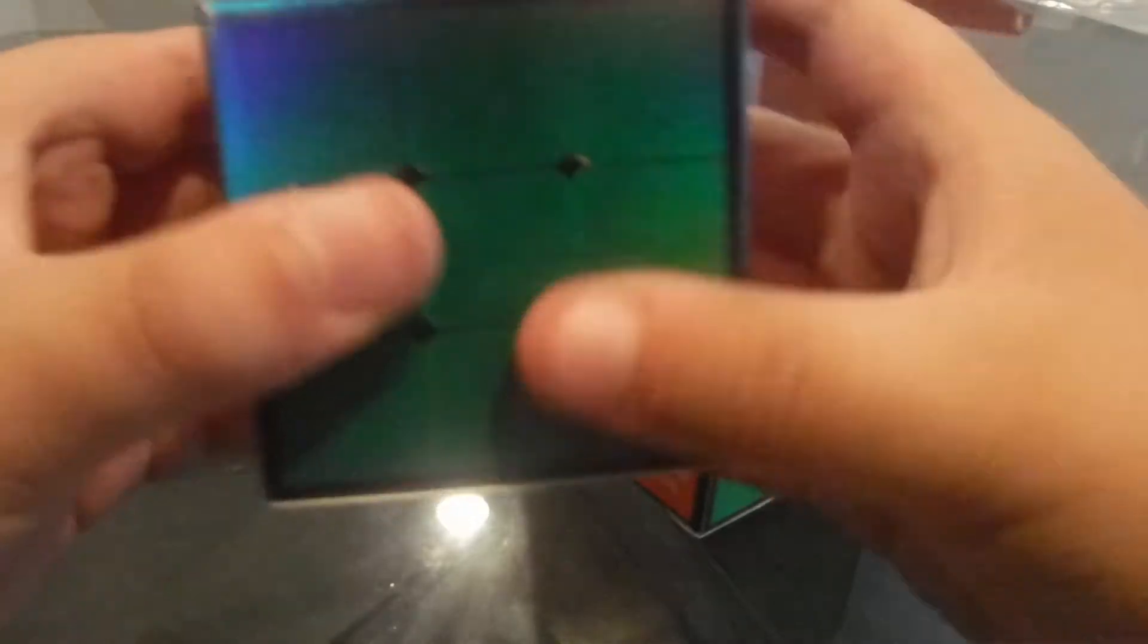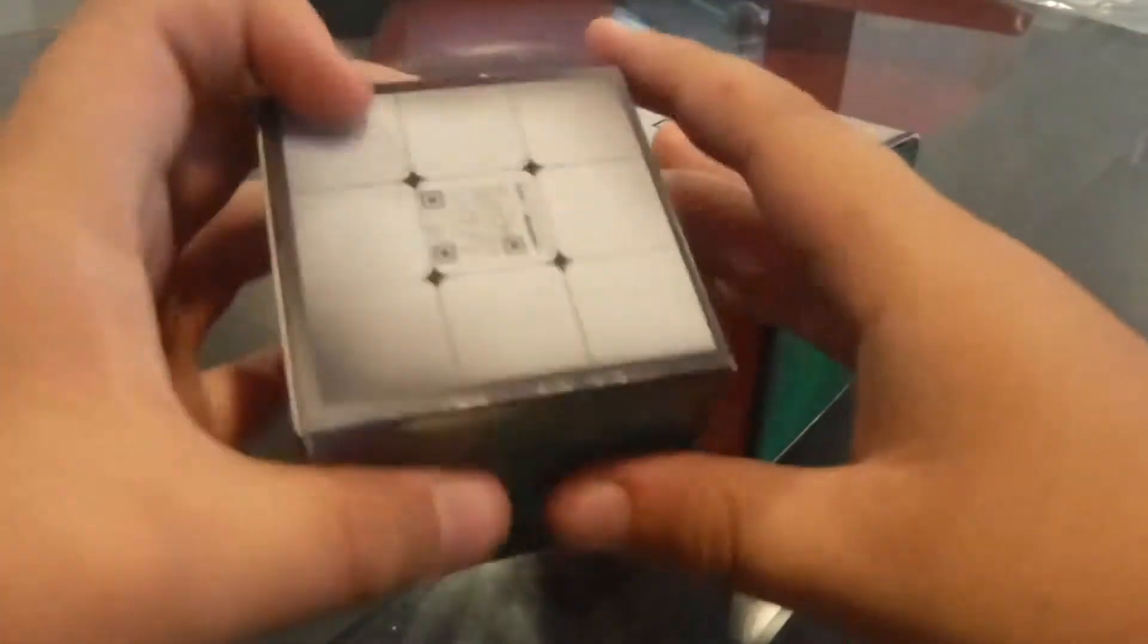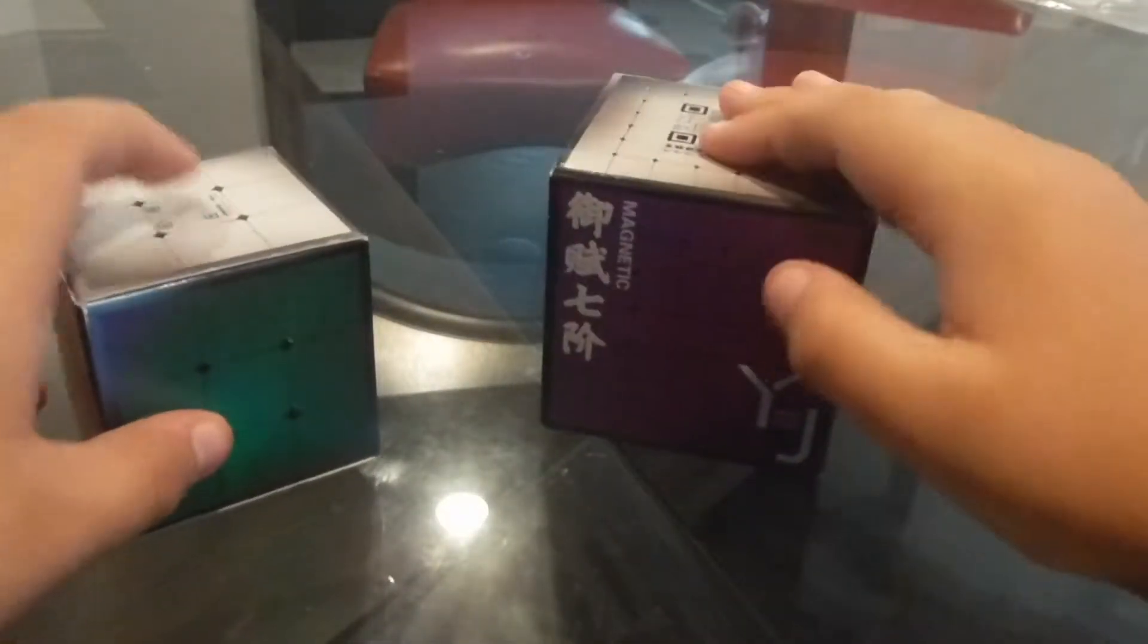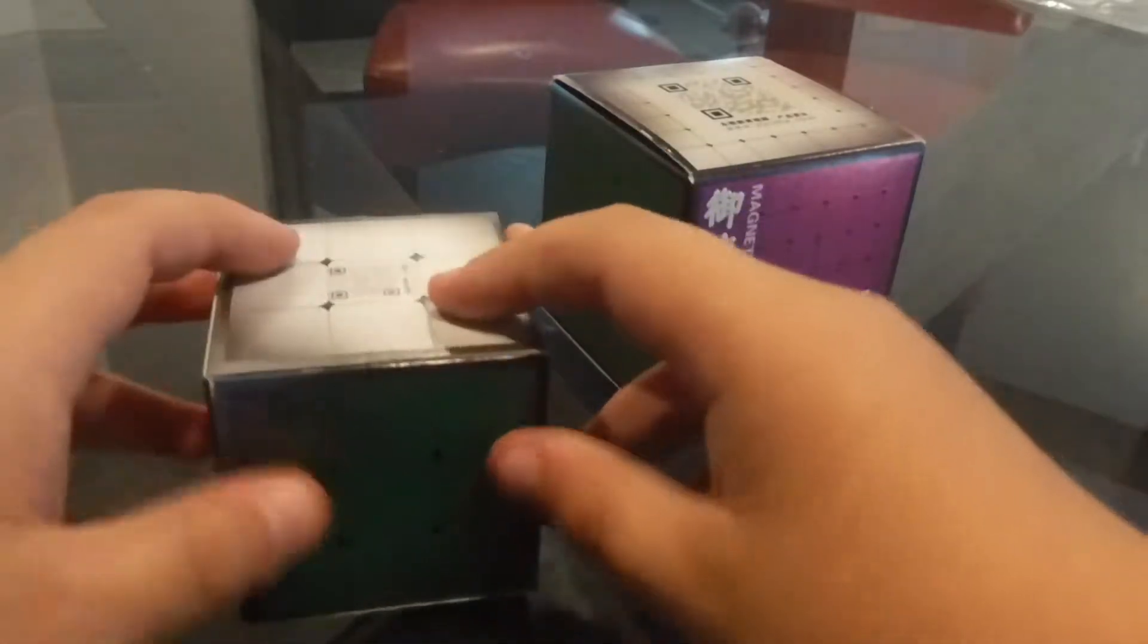I've really been liking these YJ puzzles because they're really cheap and they turn really well. The reason I got the 7x7 and not the 6x6 was because I couldn't find the 6x6.